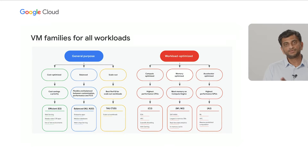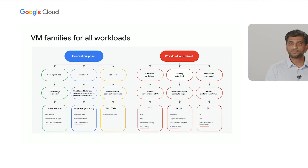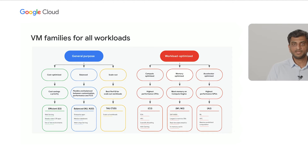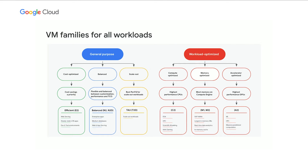Looking at general-purpose, we again have three different categories ranging from cost-optimized to price-performance-optimized for scale-out. Our cost-optimized family is the E series, or Efficient Series — if price per core is the most important consideration, that's the one you'd pick. For a balance and feature set that works for the long tail of general-purpose applications, you'd go with the N series. The newest addition is the T series, or Tau VMs, optimized with a lean feature set, eliminating waste for scale-out digital-native applications at a very attractive price point.